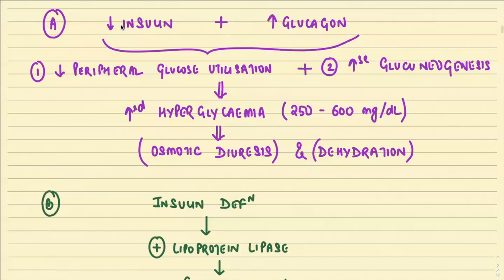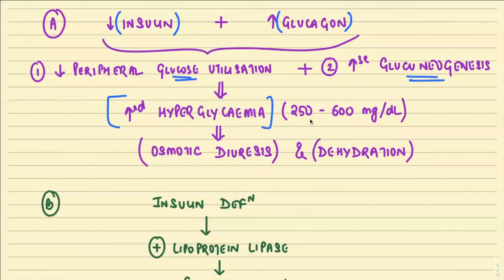In the mechanism of diabetic ketoacidosis, the first important step is a reduction in insulin and excessive glucagon, leading to decreased peripheral glucose utilization with increased gluconeogenesis. This leads to hyperglycemia, with glucose levels approximately in the range of 250 to 600 mg/dL. Such high hyperglycemia leads to osmotic diuresis and dehydration.